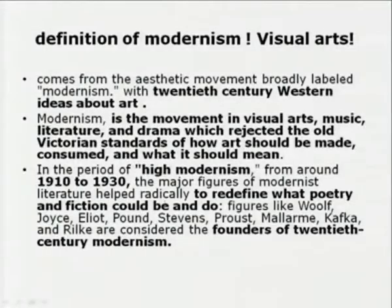This was a sort of alienation, angst, and ennui felt against Victorian complacency, and this despair often results in an apparent apathy and moral relativism. Modernism has close connections with parallel movements going on in the visual arts, especially in painting. It comes from the aesthetic movement broadly labeled modernism, with 20th-century western ideas about how art should be represented — is it about form, imitation, psychological consciousness, the mind?